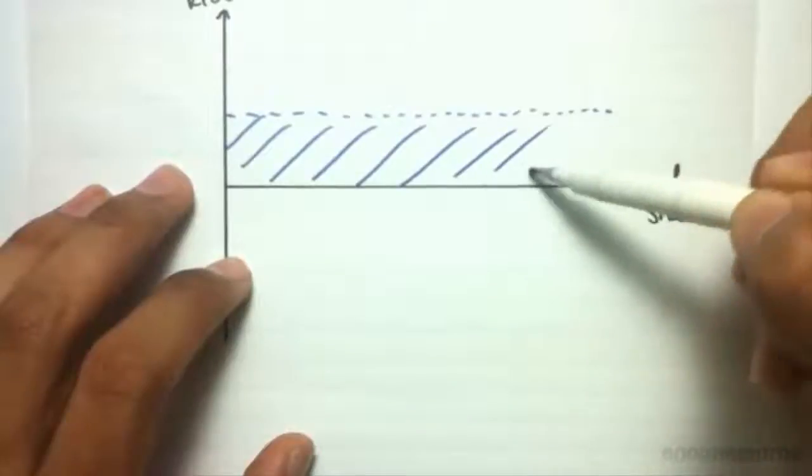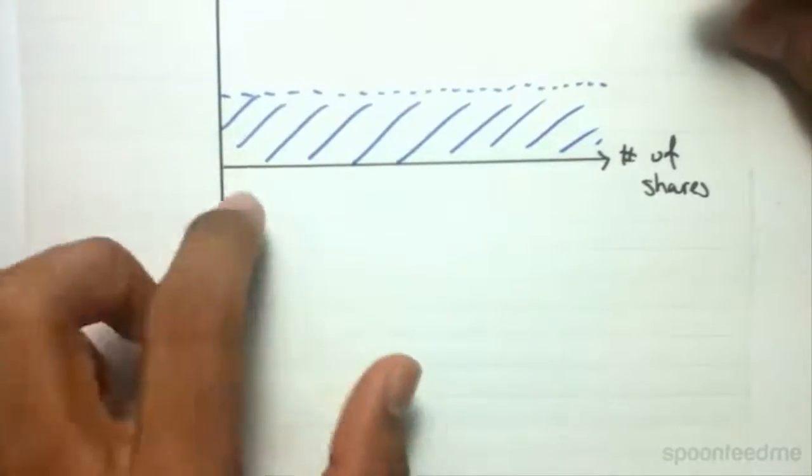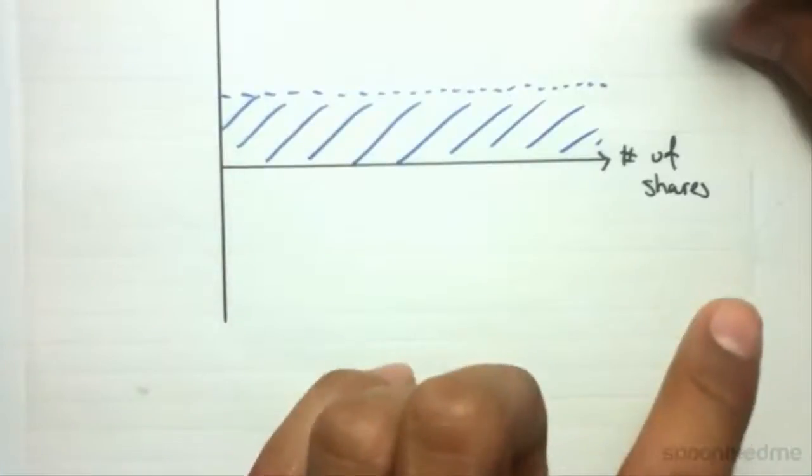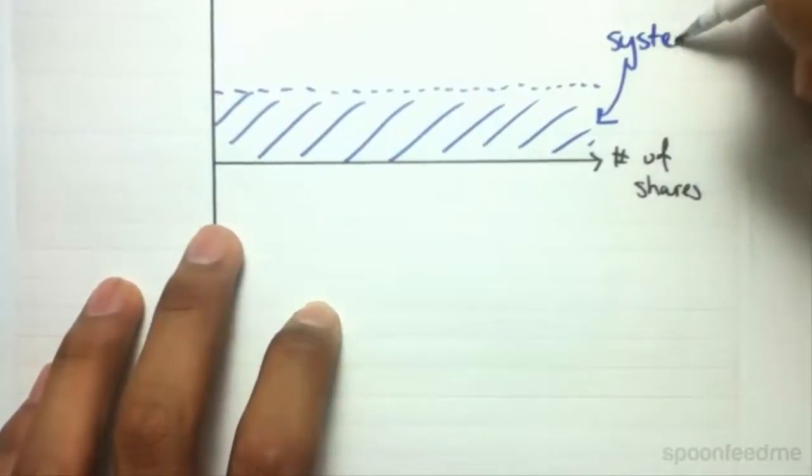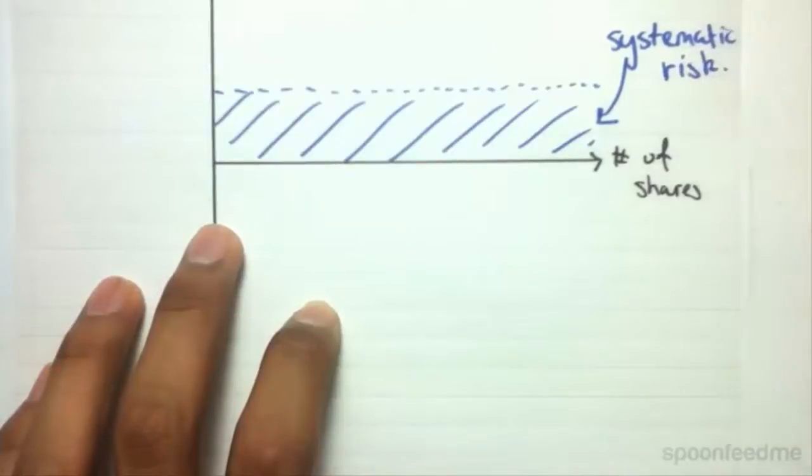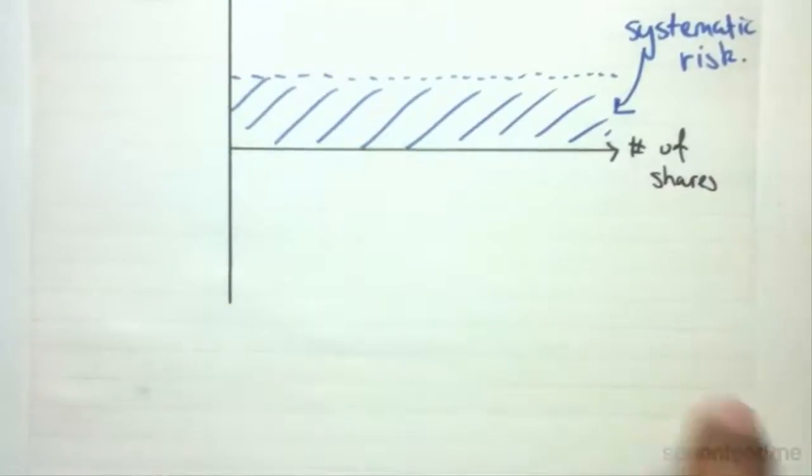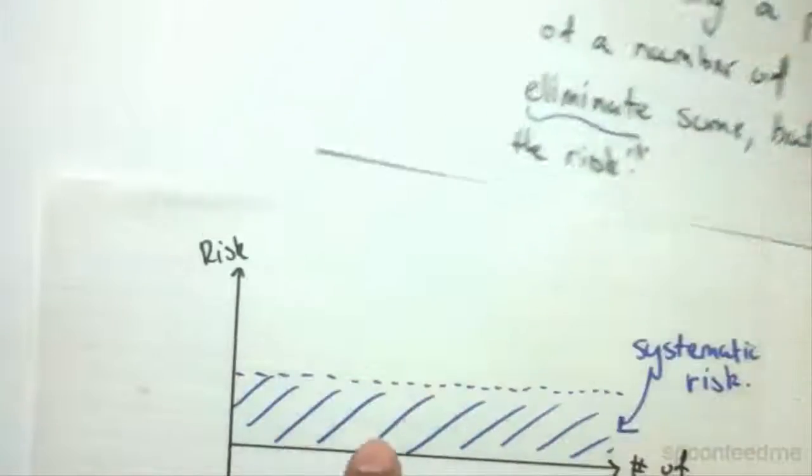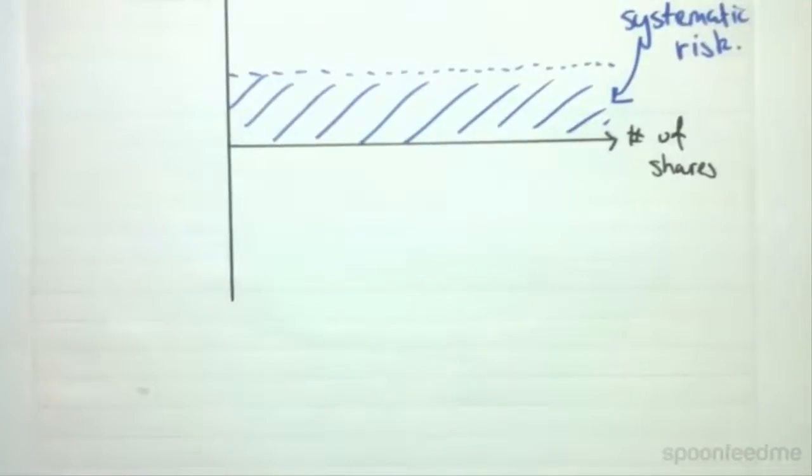Basically, there is going to be a fixed degree of risk right here. There is going to be some sort of set of risk present, and as I explained before, this is systematic risk. It can't be avoided at all regardless of how many shares you have in this portfolio. The principle of diversification does not apply to systematic risk, clearly.